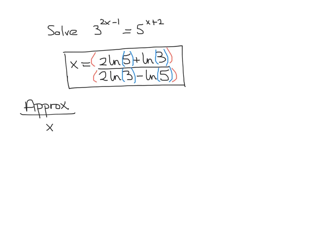When I put that into my calculator, I get X approximately equal to 7.345331. We were asked to round to three decimal places, which is the position of the five. Looking at the next digit, it is less than five, so the five doesn't change. Therefore, my answer is X is approximately 7.345.